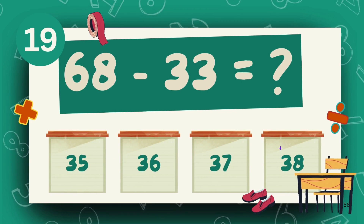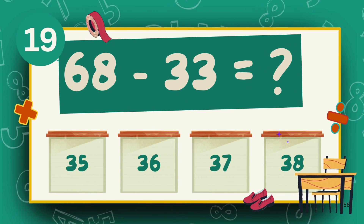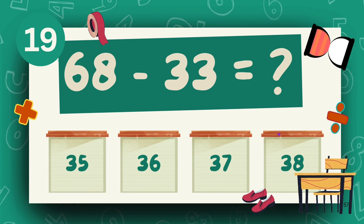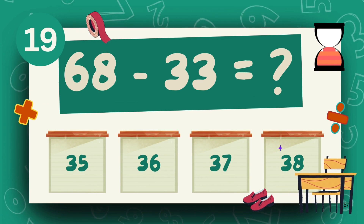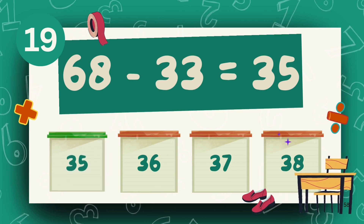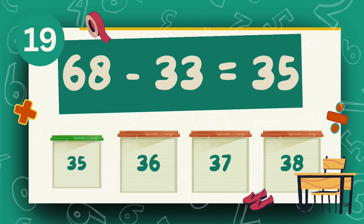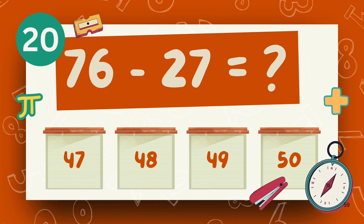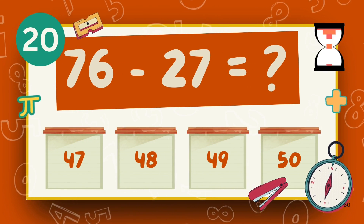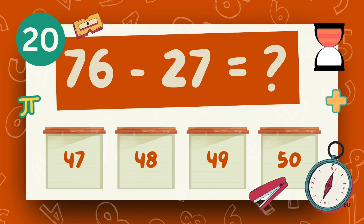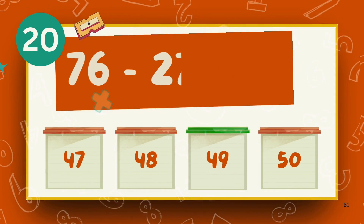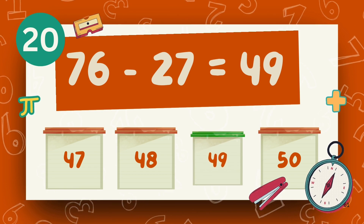What is 68 minus 33? The answer is 35. What is 76 minus 27? The answer is 49.